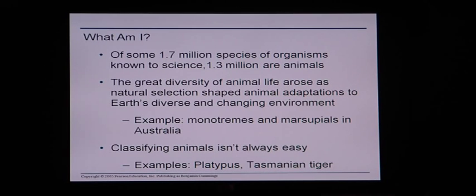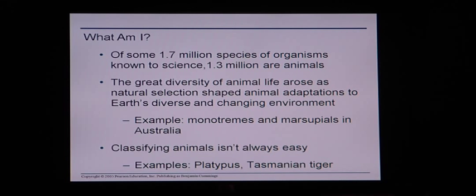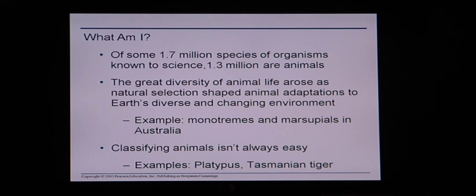Of some 1.7 million species of organisms known to science, 1.3 million are animals. Animal life is incredibly diverse, and it arose as natural selection shaped animal adaptations to Earth's diverse and changing environment. There are some animals we consider kind of weird — they don't really fit into any category perfectly. Examples are monotremes and marsupials, which we will talk about. Classifying animals isn't always easy; sometimes animals look like they should belong in certain categories, but because of some of their adaptations, they don't.